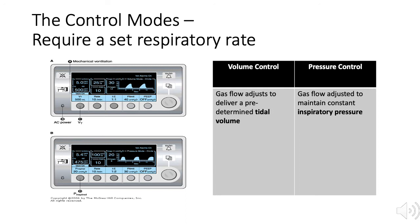This is a control mode because the respiratory rate is set at 10 breaths per minute. The ventilator is set to deliver the breaths using volume control because the tidal volume is set at 500 milliliters. For each of the 10 breaths delivered in one minute, the ventilator will deliver 500 milliliter tidal volumes. You would report the patient is receiving volume control ventilation at a rate of 10 breaths per minute and a tidal volume of 500 milliliters.